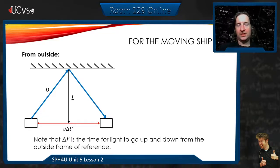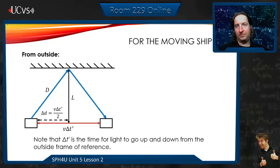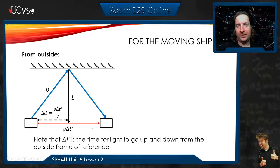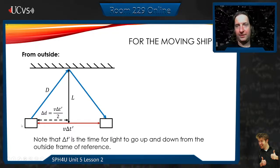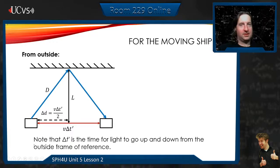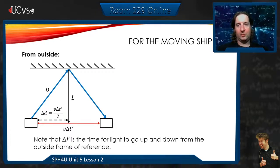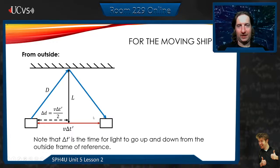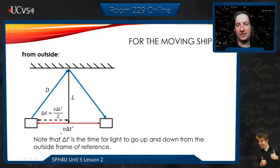So delta T prime is the time for the light to go up and down inside the ship from the outside frame of reference, from the observer looking at the ship go by them at v. It's still going to be distance L up and down, but we're going to make this triangle here where the distance horizontally is going to be v delta T prime divided by 2. It's going to be half of this distance. The full distance was v delta T prime, but this distance halfway is v delta T over 2. By the time the light comes back to the detector, the detector will have moved a distance v delta T.